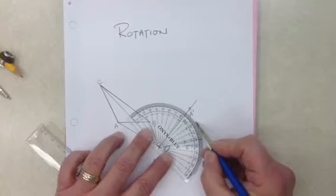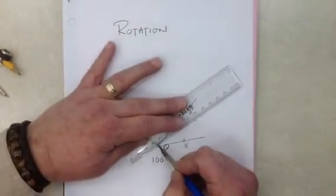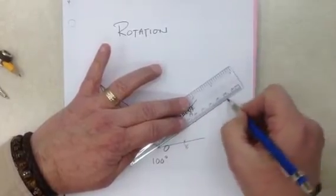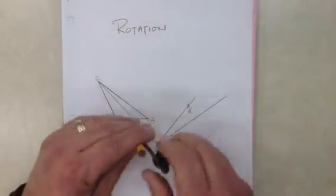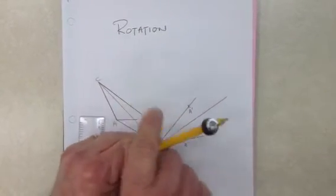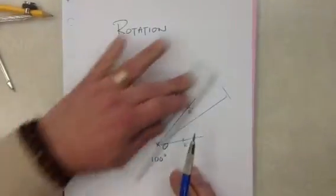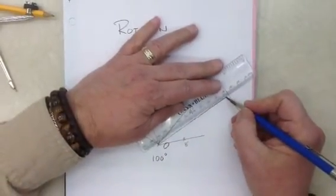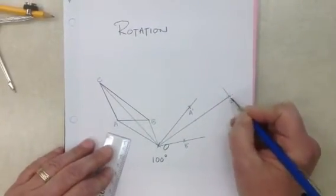I go to 100 degrees, and my new C is going to be located on this arm of that angle. Where exactly is it going to be? I stick the point in to O, I open it up to C, and I draw an arc, but I don't quite make it, so I'm going to extend this line. And voila, point C.